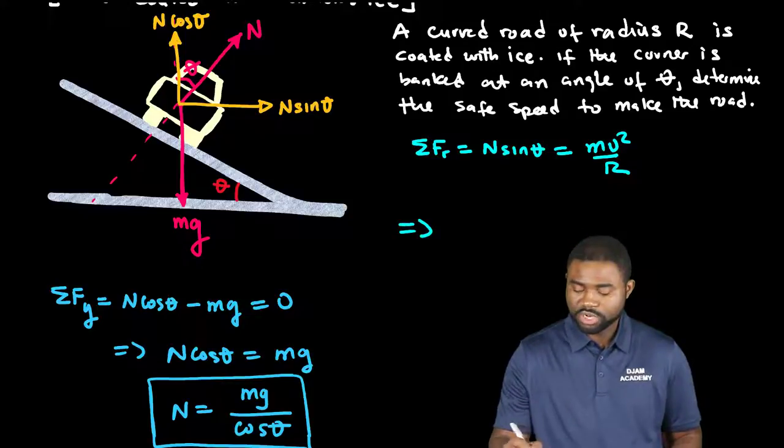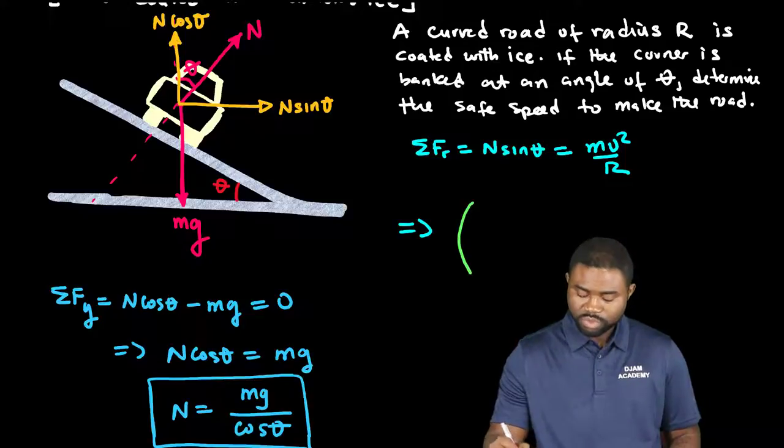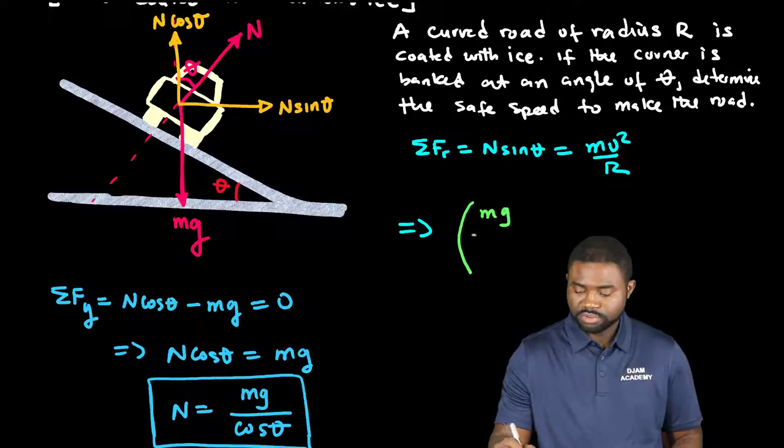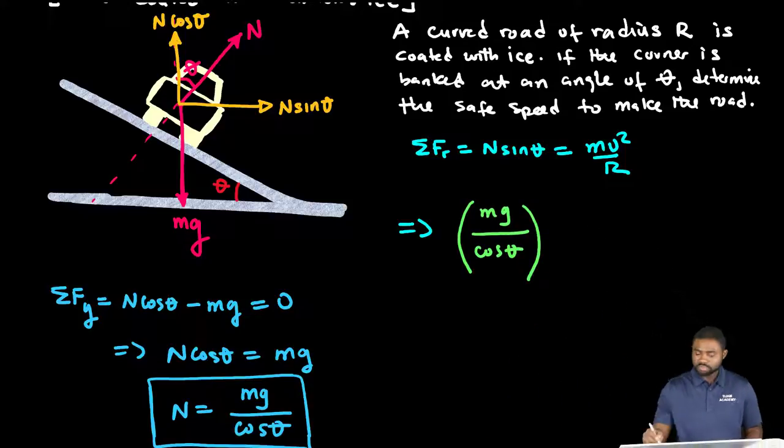So we now have N, which is mg over cosine theta, all multiplied by sine theta, equal to mv squared all divided by R. Now, sine divided by cosine is tangent.